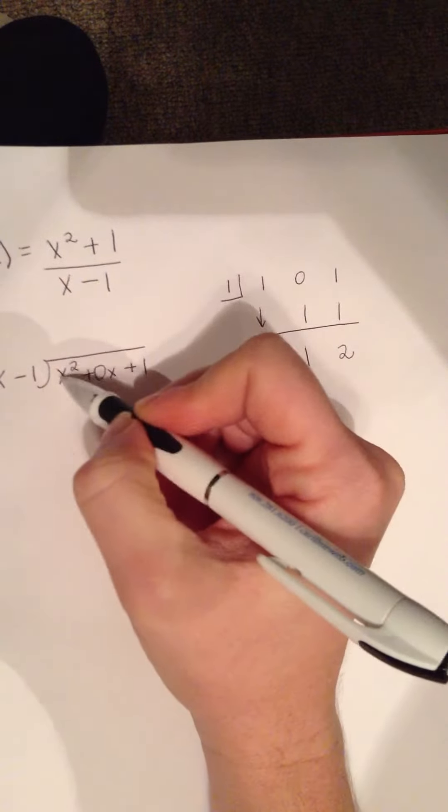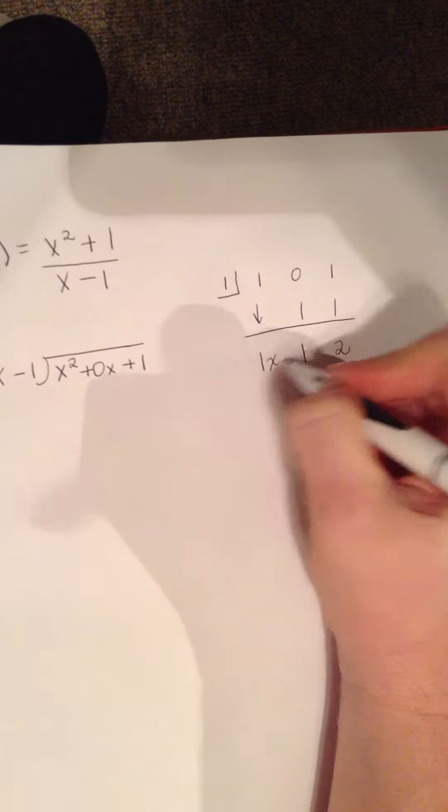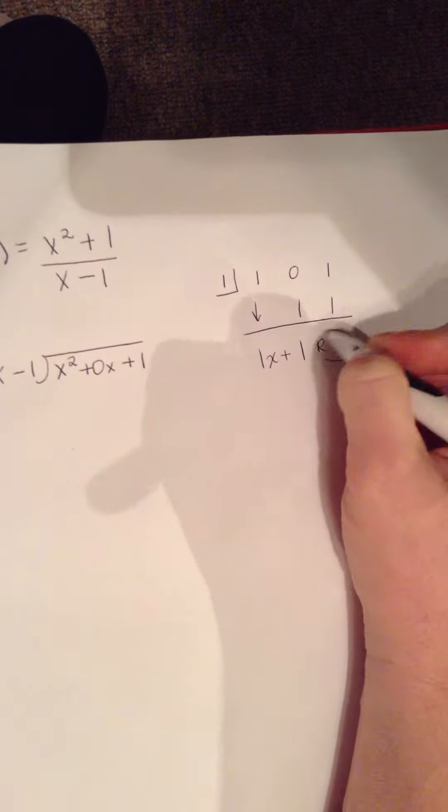Remember, we started here with an x squared. That makes this x, this a constant, and this piece a remainder.